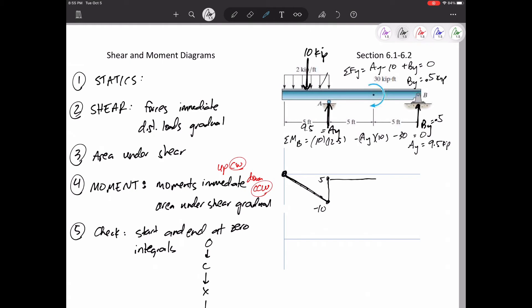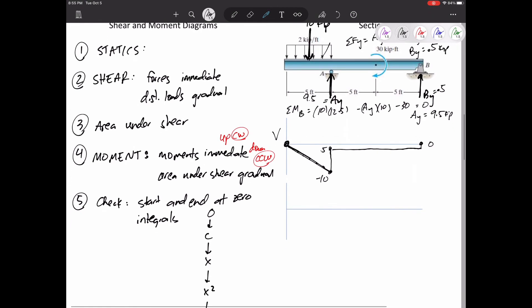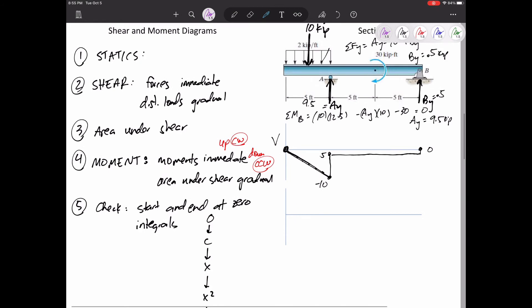So I go from negative 10 to negative 0.5. And then nothing else happens until the very end. I go up 0.5, and I end up at zero. All right. The next thing I'm going to calculate is the areas under the curve.